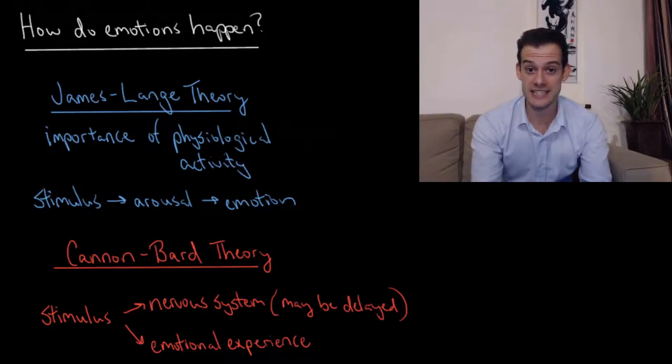Hi, I'm Michael Corayer and this is Psych Exam Review. In this video we're going to ask the question: how do emotions happen? To try to answer it, we're going to look at three theories of emotion, all of which try to address the question of where emotions are coming from.